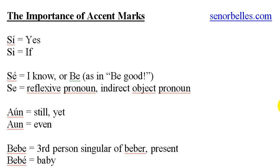The next one: 'sé' with the accent mark over the E can mean a couple of things. It can be the yo form of the verb saber in the present tense, meaning 'I know,' or it can be a command — an affirmative tú command from the verb ser, like you can tell someone to be good.